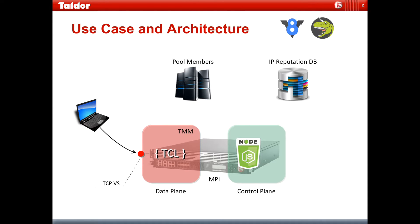JavaScript code can continue running in the background while waiting for the input and output actions to complete. The traditional TCL iRule is going to utilize an RPC connection to the control plane using the MPI, or the message passing interface. Since we're utilizing the Node.js modules for a specific task or purpose, I only need a single bit of information to pass over the RPC bridge between the data plane and the control plane. The default F5 Node.js package or module is the RPC logic taking care of the connection on the control plane or Node.js side.